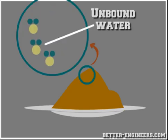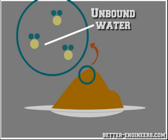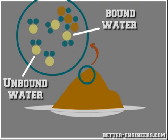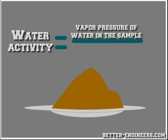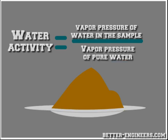Water activity is the amount of unbound water present in the sample. In other words, part of the water is normally chained to chemical groups in the sample and cannot move freely to be used, for example, by bacteria which would cause food spoilage. Water activity is based on a scale of 0 to 1, with pure water having a value of 1. It is defined as the vapor pressure of water in a sample divided by the vapor pressure of pure water at the sample temperature.